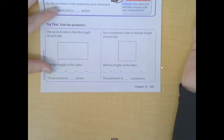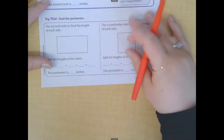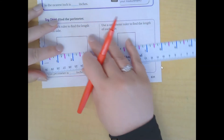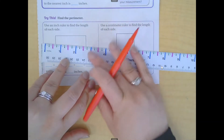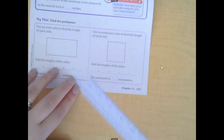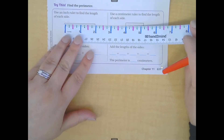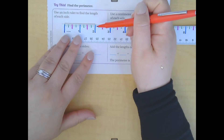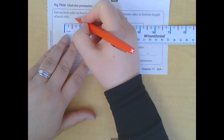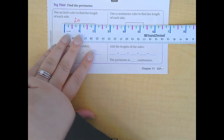We are going to skip down here — find the perimeter, use an inch ruler to find the length of each side. Let me grab my ruler. Hopefully you remember this ruler. You're going to measure each side and, like we've been saying since day one of math, label, label, label. Remember, you don't start measuring from the end of the ruler — you always start measuring at zero. So when I measure at zero, I can see that this side is two inches long. It's important to label it with inches.